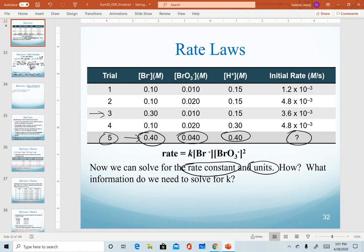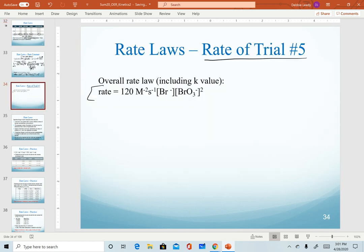And before I plug those in, I like to estimate my values. So notice that the concentration of bromide is higher than any other trial. My concentration of bromate is also higher than any other trial. Since my concentrations are higher, I expect my initial rate to be higher than any of the values for trials 1 through 4. Always good to estimate your values before you calculate so that you can see that your answer makes sense.